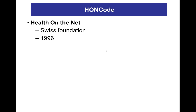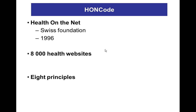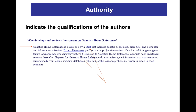Currently the most used is HONcode, initiated in 1996 by a Swiss foundation, Health on the Net, and adopted by about 8,000 websites worldwide. Information providers or webmasters who are candidates for certification of their site must complete an online questionnaire where they commit to respecting the 8 principles of HONcode. The first is Authority: indicate the qualifications of the authors. Any medical or health information provided by the site will only be given by medical professionals, or it should be specified that a part of the information is from non-medically qualified persons.